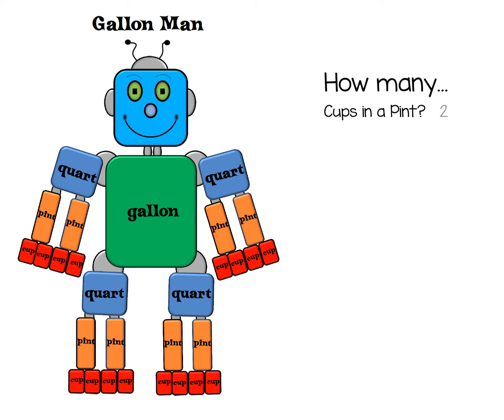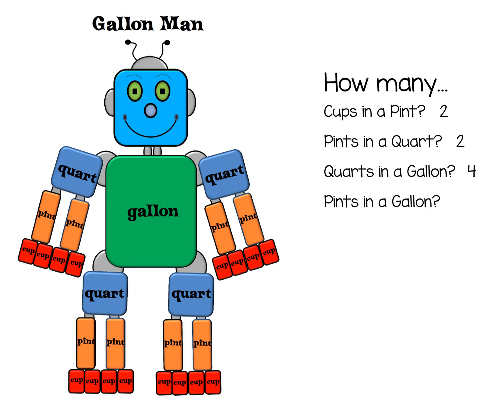The answer is two. How many pints are in a quart? The answer is two. How many quarts in a gallon? The answer is four. How many pints in a gallon? The answer is eight. How many cups in a gallon? The answer is 16.